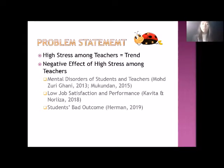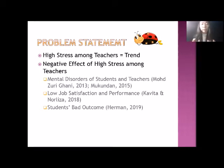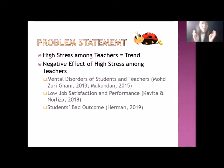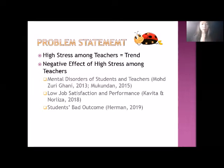The last negative effect is students' bad outcomes. As mentioned in the first point, if the teacher cannot control stress, students also become stressed. When they are stressed, they cannot really learn and achieve good outcomes. Indirectly, teacher's stress leads to student's stress, and student's stress leads to poor homework, poor exams. What will happen? They stress, and their parents also stress. This is like a negative cycle, round and round.